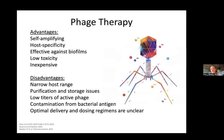Phage therapy has several advantages. First, phages are self-amplifying — if you can get some phages to the site of infection, they'll make baby phages, and very quickly you can outnumber the bacteria. They're also incredibly specific for the strains of bacteria that infect them, which is attractive to anyone who's ever taken antibiotics and gotten diarrhea, because antibiotics tend to kill all sorts of bacteria, not just the ones causing problems. Bacteriophages are effective against biofilms like sputum or wounds, whereas conventional antibiotics have trouble getting through. Phages have low toxicity, and finally they're inexpensive — this could be a solution that helps folks around the world where access to conventional antibiotics is limited.